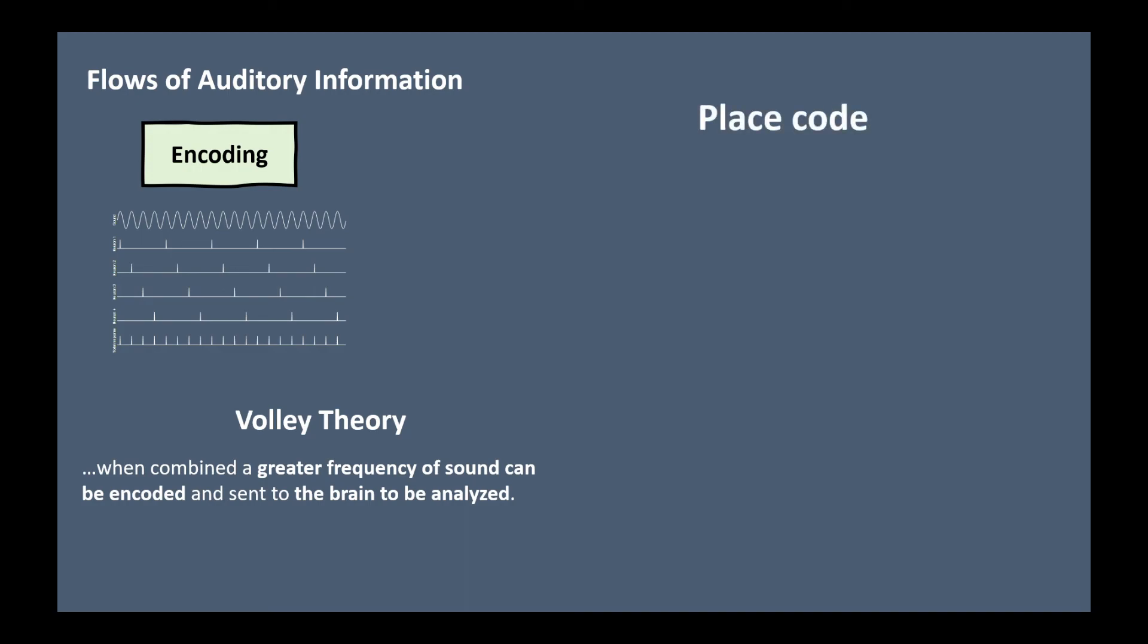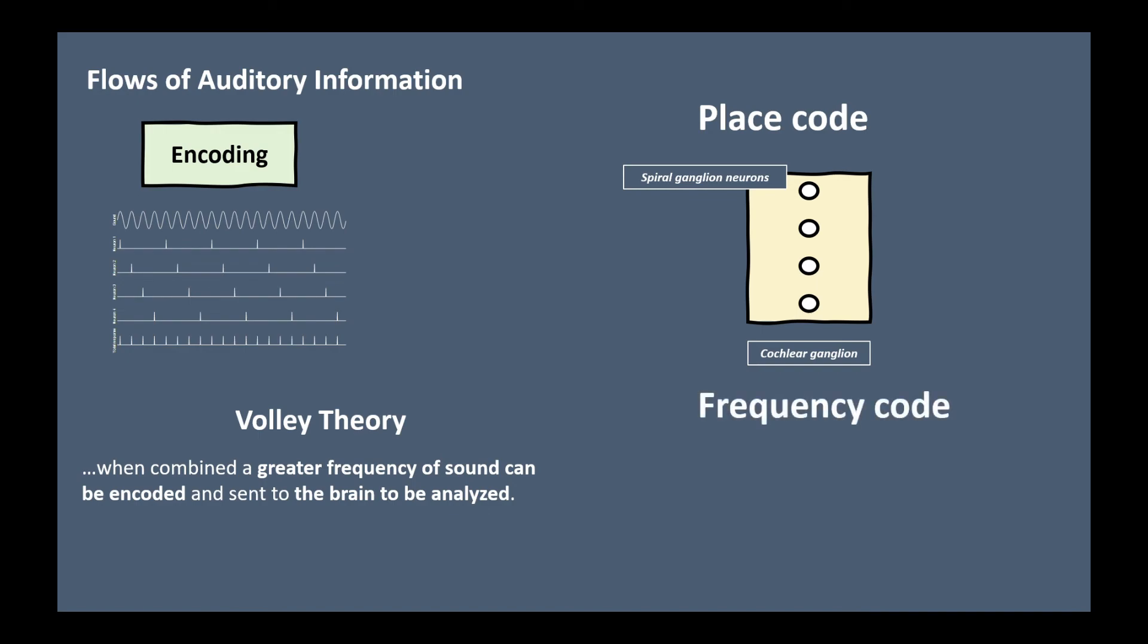A place code: The fibers are arrayed in a tonotopic map in which the position is related to characteristic frequency. A frequency code: The fibers fire at a rate that signals the frequency of the stimulus. Frequency coding is of particular importance when a sound is loud enough to saturate the neural firing rate. Although fibers with different characteristic frequencies respond to such a stimulus, each provides information about the stimulus frequency in its firing pattern.